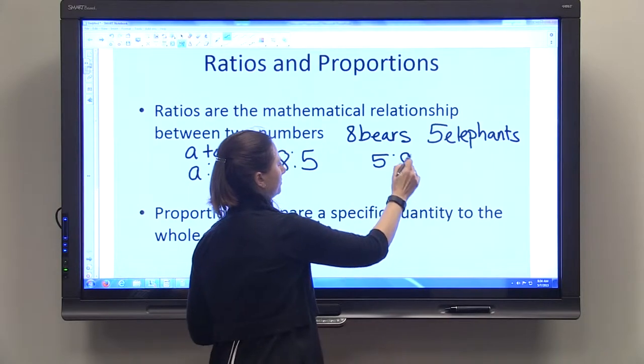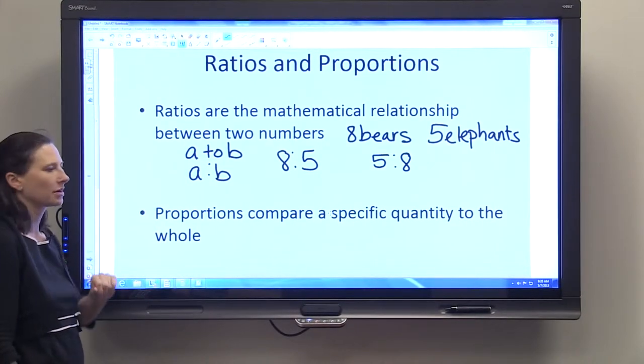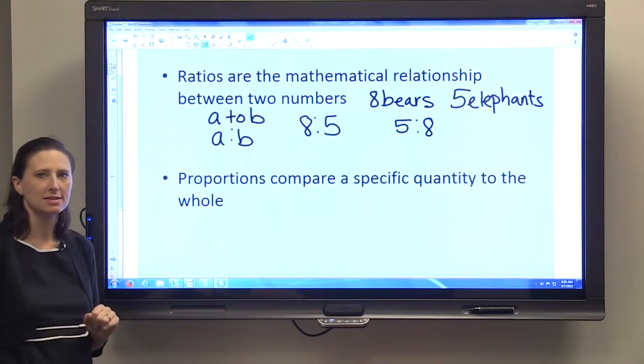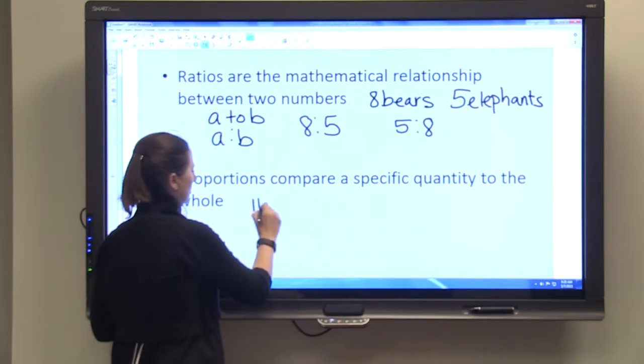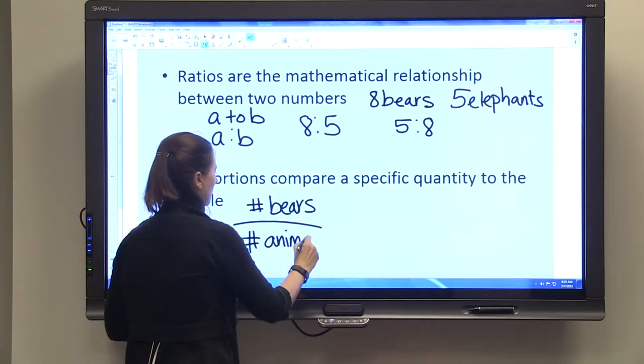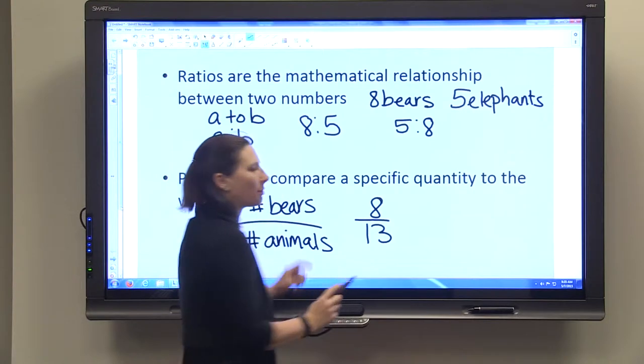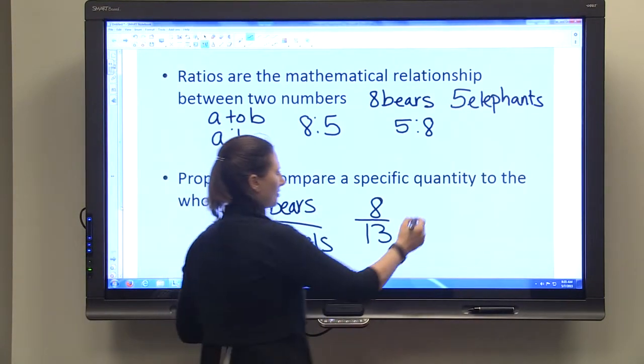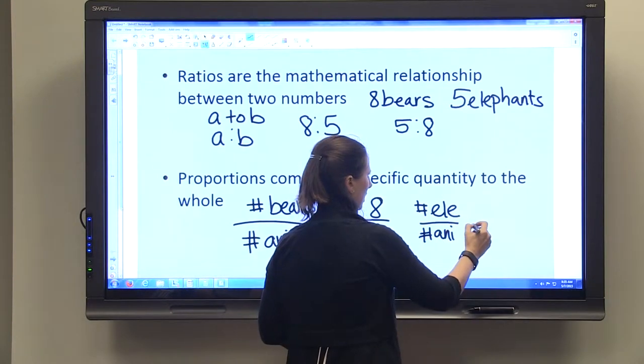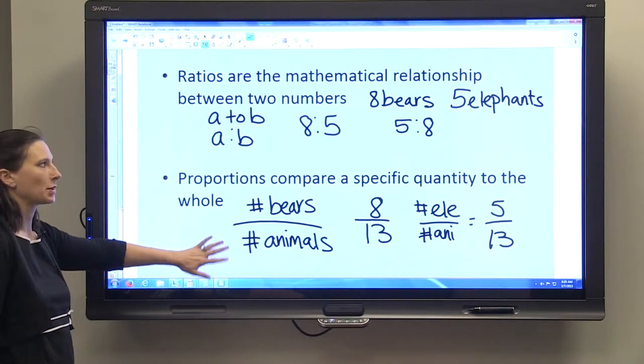A proportion is related to a ratio but not quite the same. A proportion compares a specific quantity to the whole. For example, if we use those same bears and elephants and compare the number of bears to the number of animals, we have a proportion. There are 8 bears and there are 13 animals - this is our proportion of bears to animals. If we have number of elephants to number of animals, we have 5 to 13.